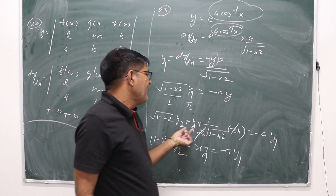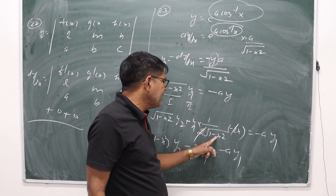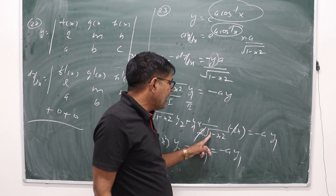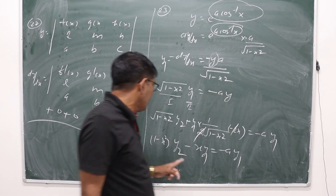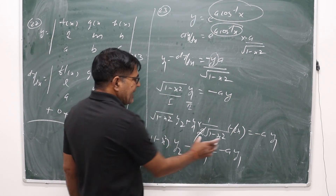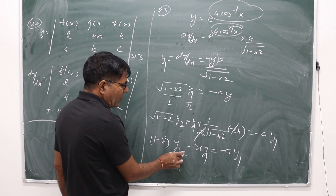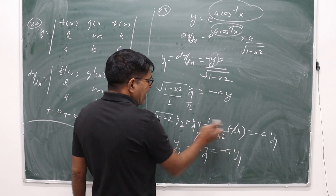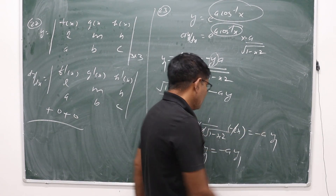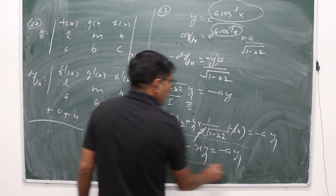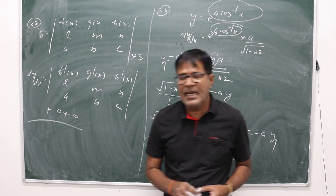Applying the product rule to √(1-x²) · y₁: the derivative gives √(1-x²) · y₂ + y₁ · (-x/√(1-x²)) = -ay₁. Multiplying through by √(1-x²) and simplifying: (1-x²) · y₂ - x · y₁ = -ay₁ · √(1-x²)... simplifying the right side using the earlier relation finally gives (1-x²)y₂ - xy₁ = a²y, which is the required second-order derivative equation.